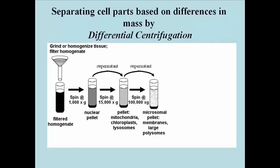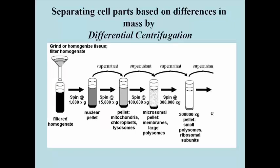You can follow the rest of the eukaryotic cell dissection to the last supernatant on your own. The cytosol is the last supernatant and it contains all of the soluble components or chemicals in the cytoplasm, and no longer contains any of the particulates, any of the organelles or small structures in the cell. Again, this is a cell fractionation or a cellular dissection.